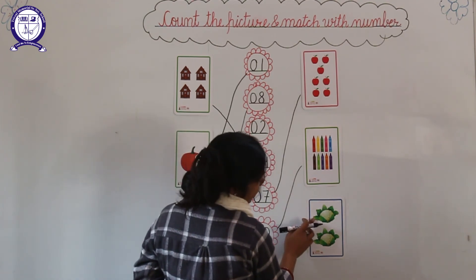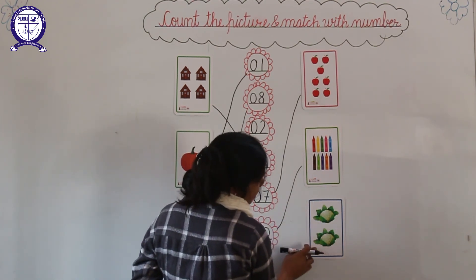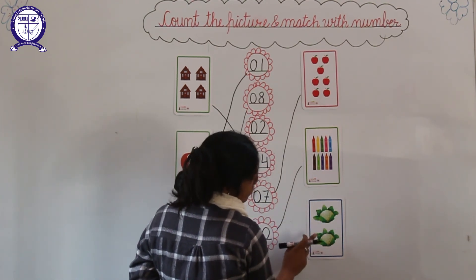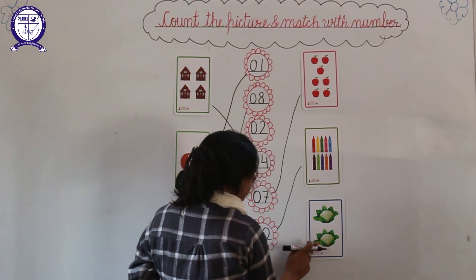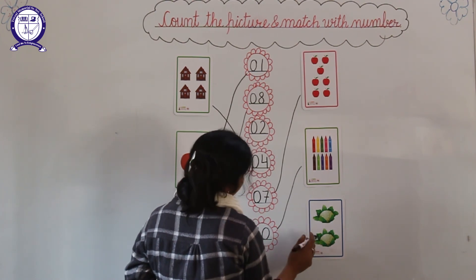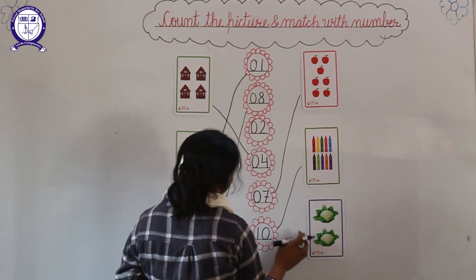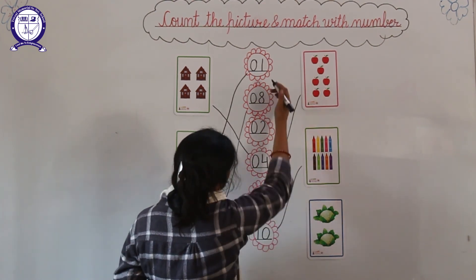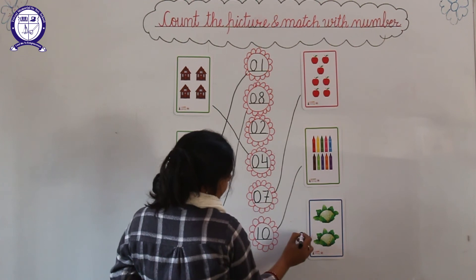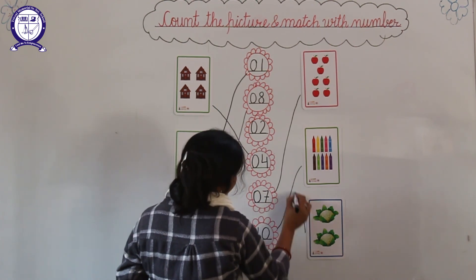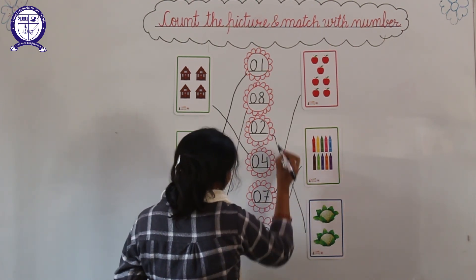And look here — how many pictures are there? 1, 2. And match with 2. Where is 2? Here. And match with 2.